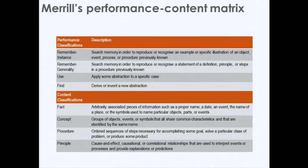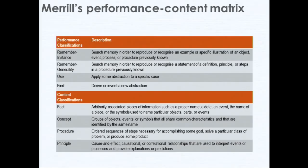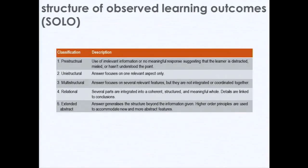David Merrill is still around and still active. What he's done is take the notion of information processing levels and the content classifications and create two dimensions. Within that you've got things like 'remember an instance' — for example, I touched a hot plate, it burned me; 'remember generality' — that plate looks hot, maybe I won't touch it; 'use' — don't touch that hot plate; and 'find' — maybe I use oven mitts. It's that notion of abstracting in terms of performance but also in terms of content, from facts right through to principles — four levels.